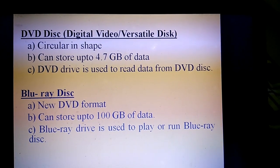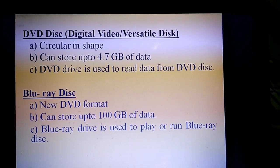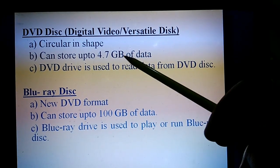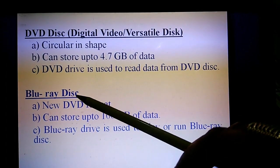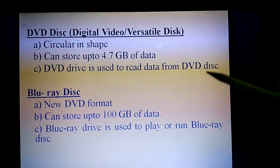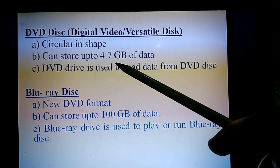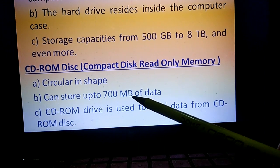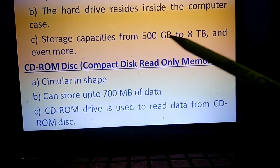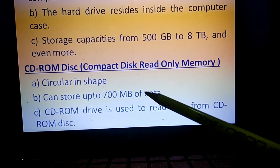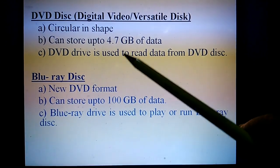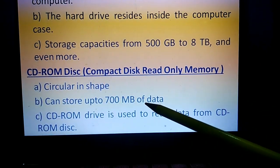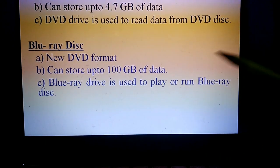The next is DVD disc, which stands for Digital Video or Versatile Disc. It is also circular in shape and can store up to 4.7 GB of data. A DVD drive is used to read data from a DVD disc. The CD can store up to 700 MB, the hard disk 500 GB to 8 TB, so the hard disk has more storage capacity than both CD and DVD, and DVD has more storage capacity than CD.